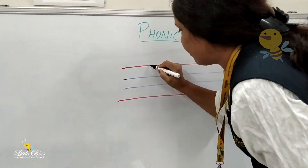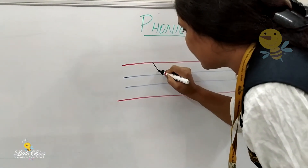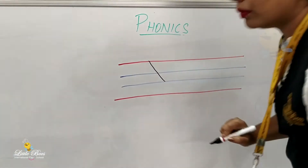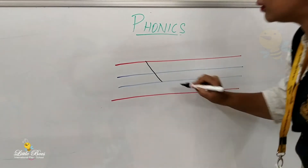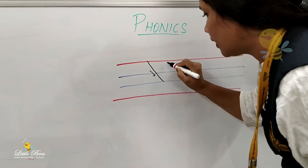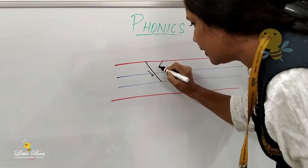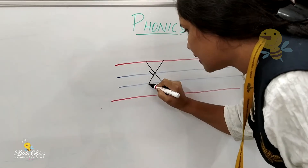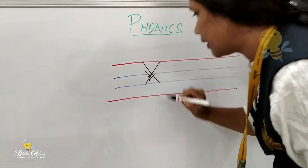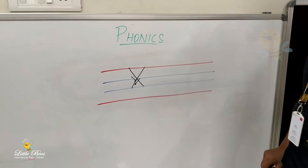So we start from the red line, a slanting line till the second blue line. And then from the red line, another slanting line till the second blue line. This is letter X.